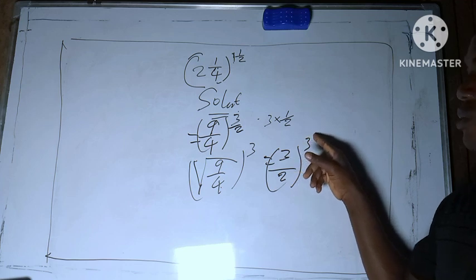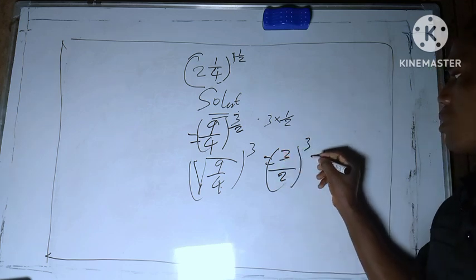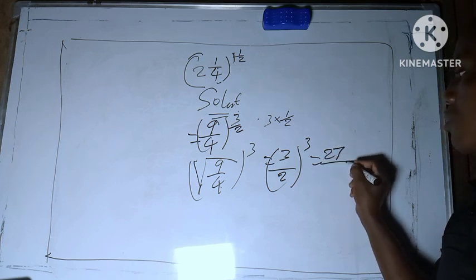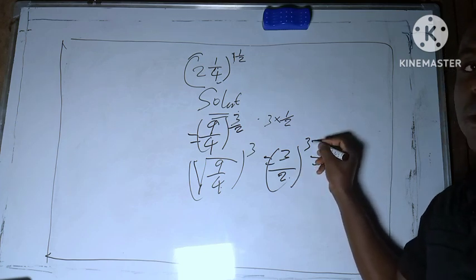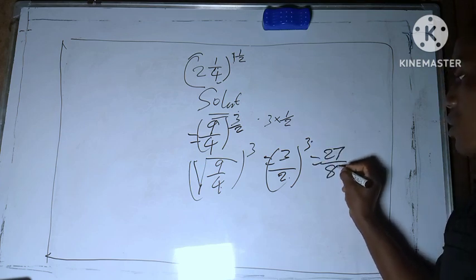So 3 raised to power 3, that's 3 times 3 times 3, gives 27, over 2 raised to power 3, that's 2 times 2 times 2, gives 8. So we have 27 over 8.